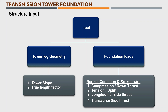We will see how to find these values. The second input is foundation loads. For both normal condition and broken wire conditions we need to have four kinds of forces: one is compression or down thrust, second is tension or uplift, third is longitudinal side thrust, and fourth is transverse side thrust. These four forces we extract from the structure model, from the previous structure model videos we had already shared.